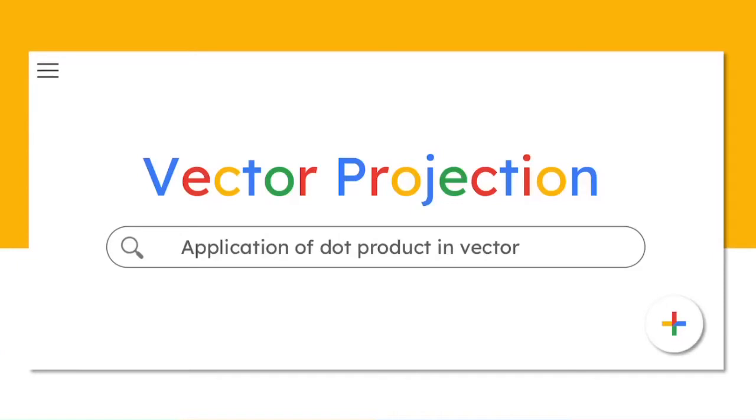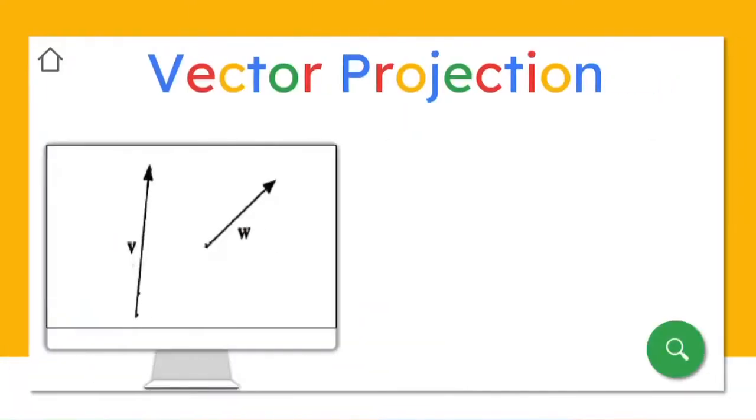In this video, I explain one of the applications of dot product in vectors, which is vector projection. Let's see - here you have two vectors, vector v and vector w. You want to focus on this vector v.